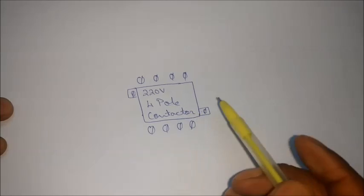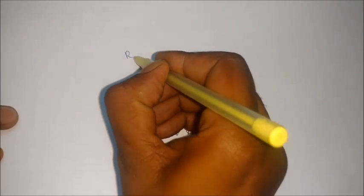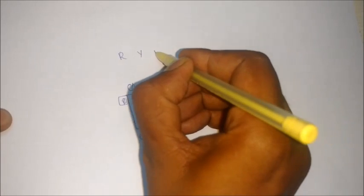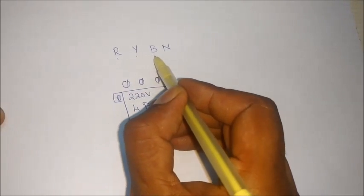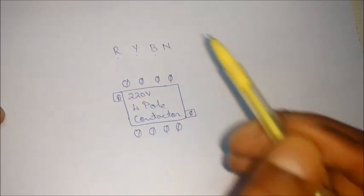Now basically what happens, we have a 3-phase current here: R, Y, B and N, nothing but the red, yellow, blue phase and the neutral.